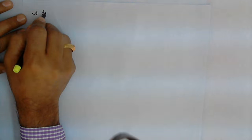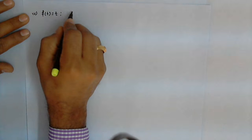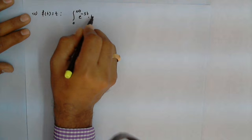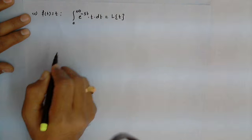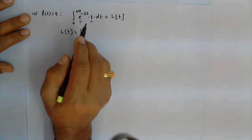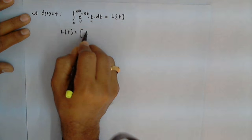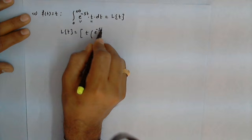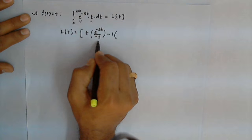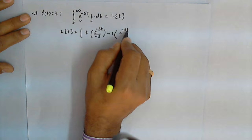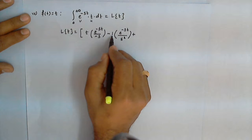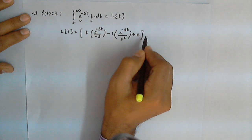Now let's find the Laplace transform of f(t) equals t. By definition, Laplace of t is the integral of e raised to minus s t times t dt. We apply the generalized u times v (integration by parts) rule: first function t as it is times the integral of e raised to minus s t, which is e raised to minus s t upon minus s; then minus the derivative of t, which is 1, times the integral of e raised to minus s t upon minus s, giving e raised to minus s t upon s squared. Since the derivative of 1 is 0, the process terminates. This is evaluated from 0 to infinity.